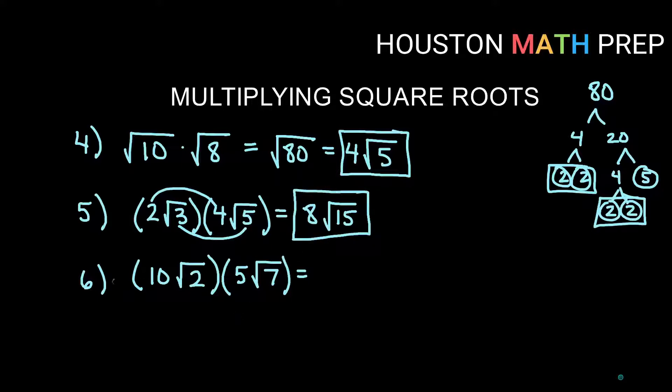Let's look at the next one here. I've got 10 times root 2 multiplied by 5 root 7. So again, outsides multiplying, 10 times 5 is going to give us 50. And then on the insides, root 2 and root 7 will be under the root and 2 times 7 is 14. And root 14 can't be simplified either. So we would leave this as 50 times square root 14 for that answer on number 6.